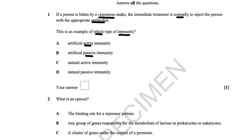Active immunity is where you expose the immune system to an antigen. The immune system goes through clonal selection and clonal expansion, and produces memory cells so that when you subsequently experience the same antigen — either on the surface of a pathogen or on a vaccine — you produce the correct plasma B cells and antibodies more rapidly. Active immunity involves exposing the body to the antigen on the surface of a pathogen or vaccine.